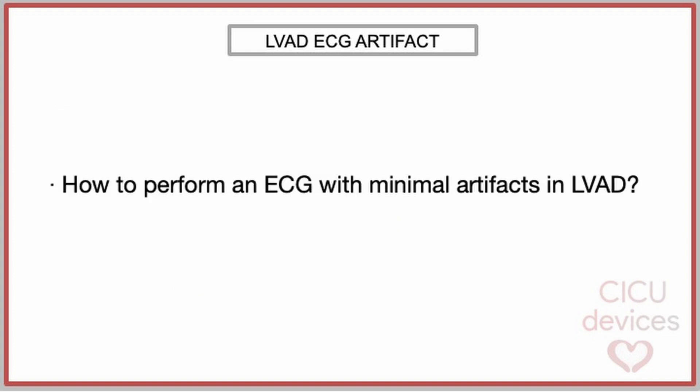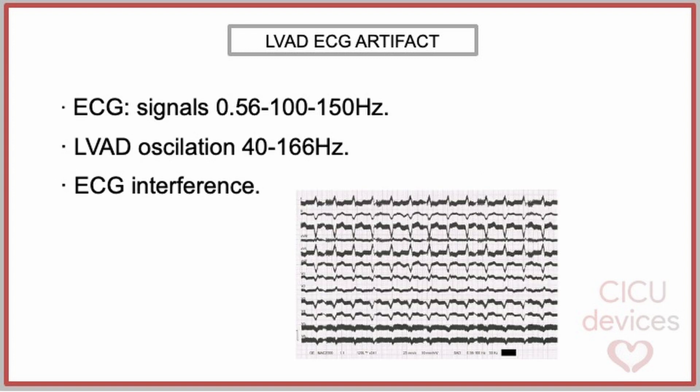So how to perform an ECG with minimal artifacts in a patient with an LVAD? The ECG typically deals with signals ranging in frequency from 0.056 to 100 or 150 Hz. So the oscillation of LVAD ranging from 33 to 166 Hz can fall within this frequency range, generating ECG interference.